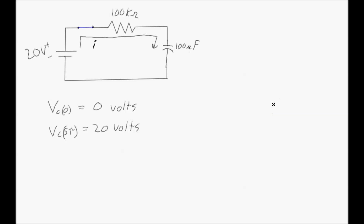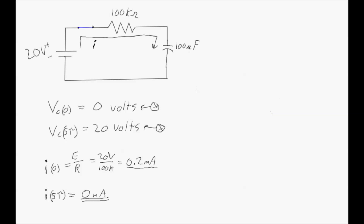But what about current? How does current behave in those two examples using an inductor and a capacitor? Going back to the first diagram with a 100 microfarad capacitor: in the initial instant the circuit is closed there's going to be a zero volt drop across the capacitor, rising up to a 20 volt drop after five time constants. At time zero there's not going to be any voltage resisting the power supply, so current is going to flow at its maximum. We can figure out the current using Ohm's law: V equals IR, rearranged to I equals V over R.